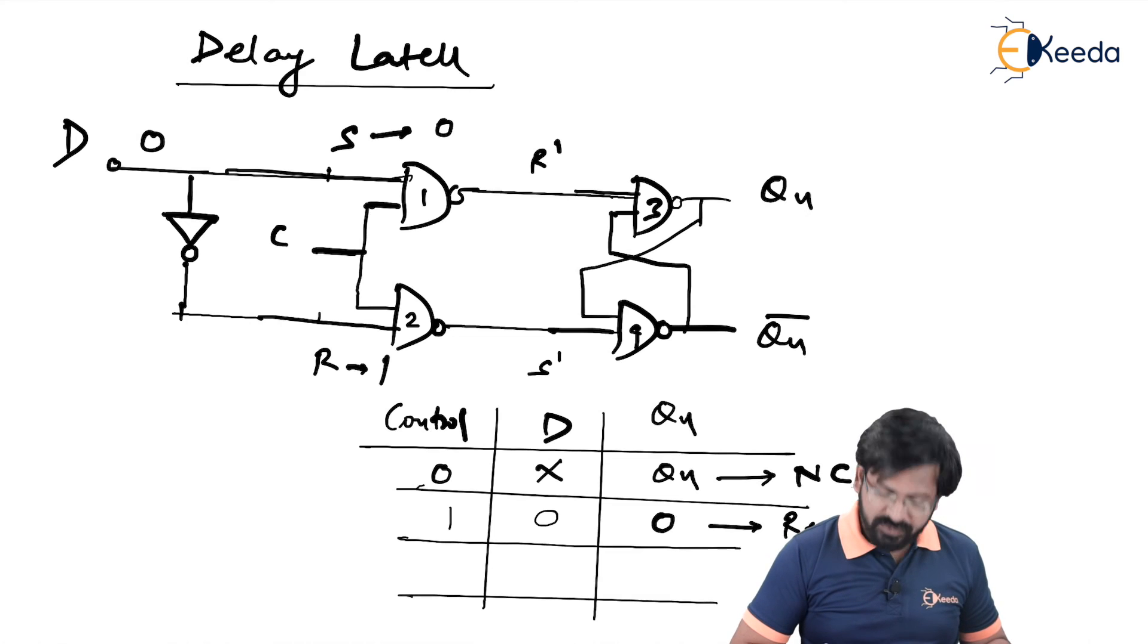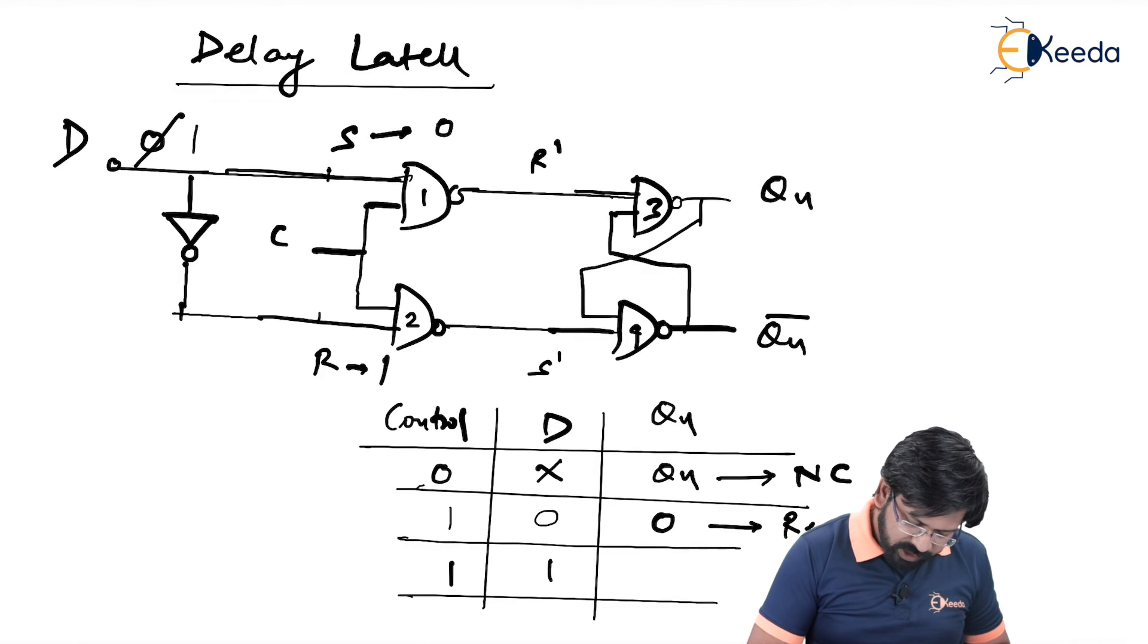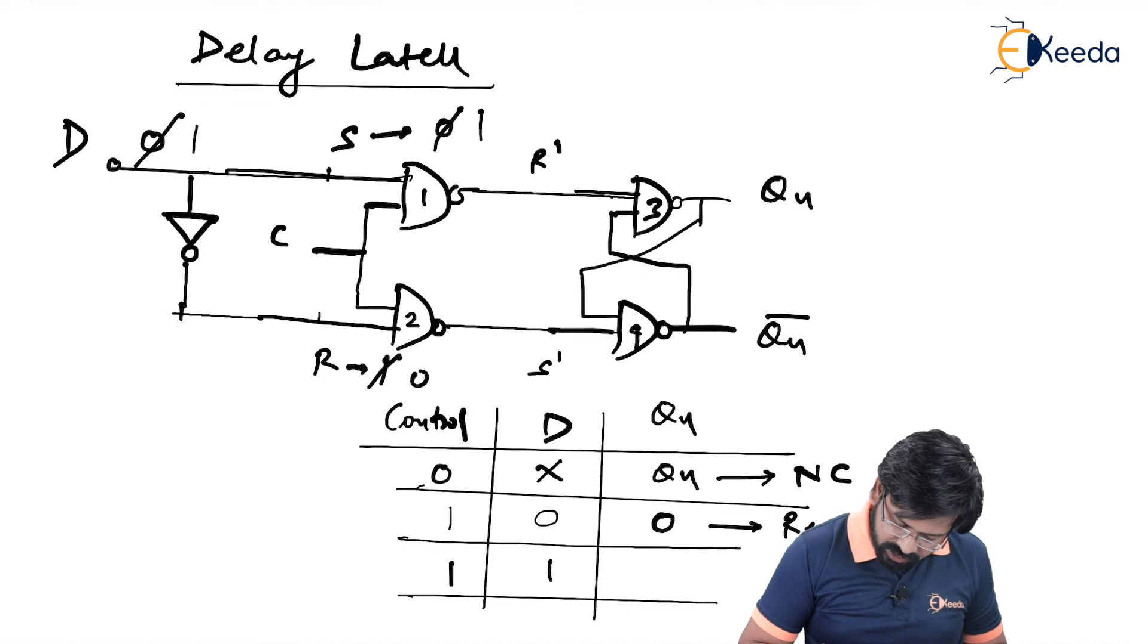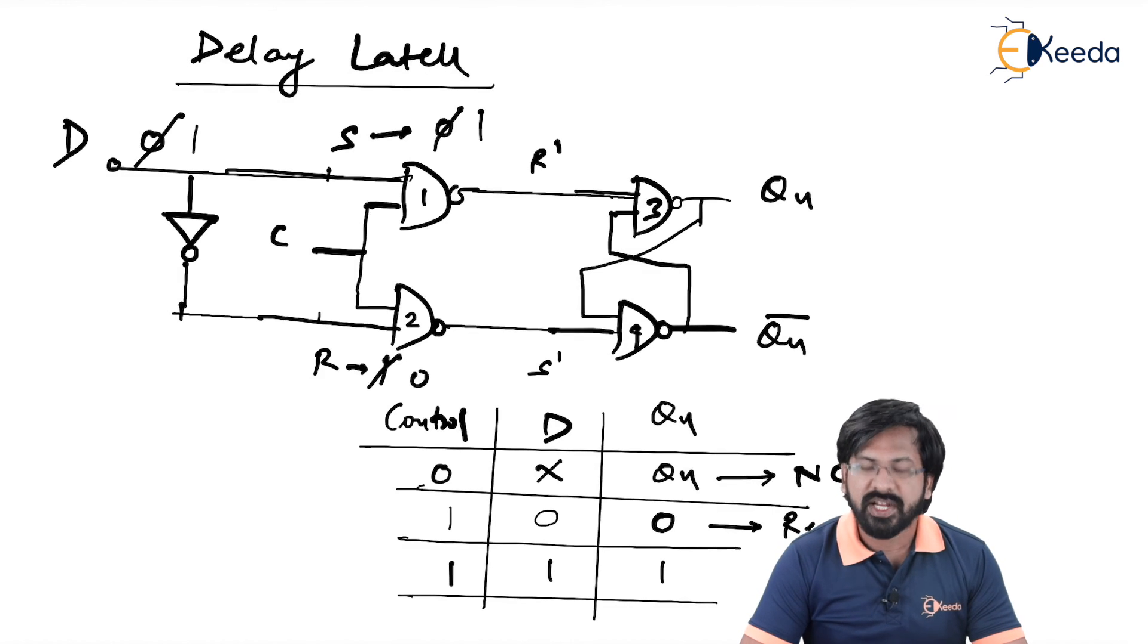In one more and the last condition, control equal to 1, D equal to 1. When D is equal to 1, as you can see, when D is changed to 1, this S is changed to 1 and R is changed to 0. So when S is 1, R is 0, because S is 1, it gets into set condition. That is, latch gets into set condition. Therefore Qn is equal to 1. So these are the only possibilities of input that we can apply. And then let us summarize what delay latch really does.